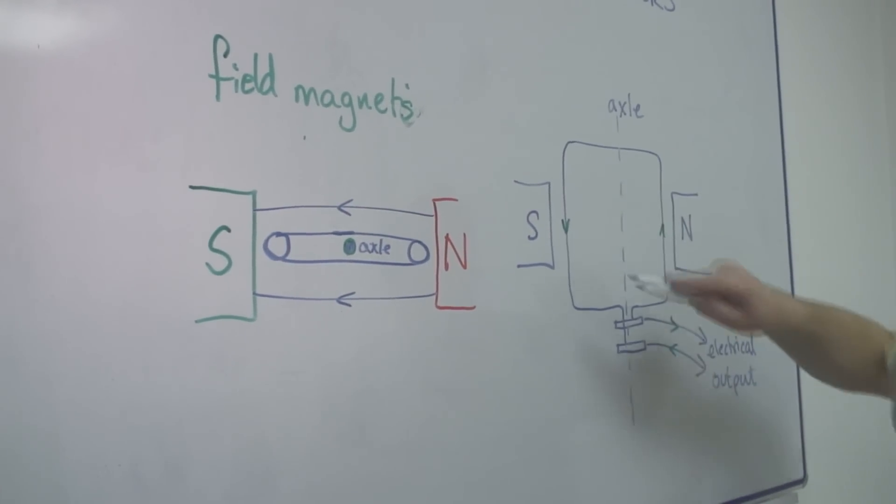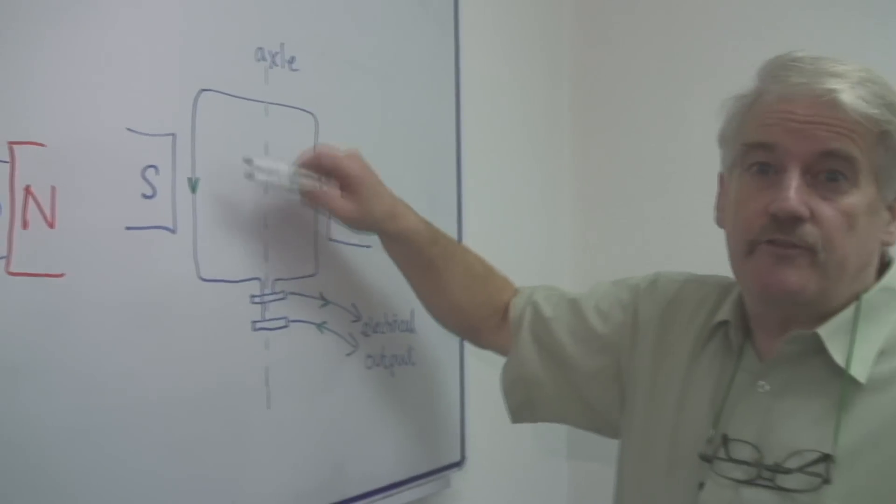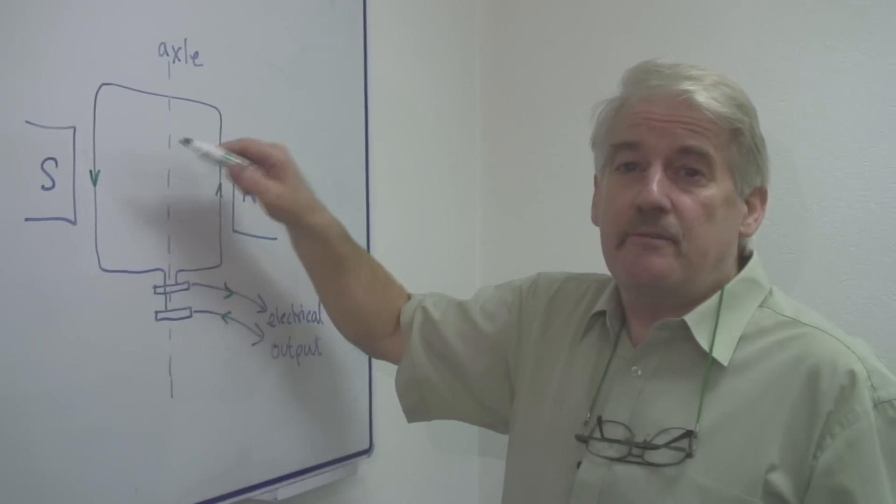Now if you've got many, many coils on here, it generates this current for each of the coils and therefore you get a bigger current.